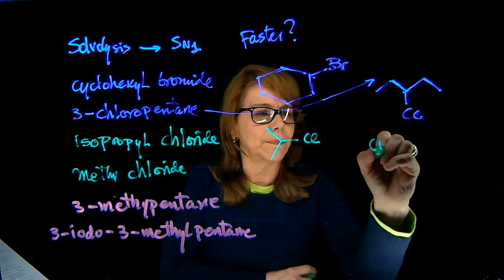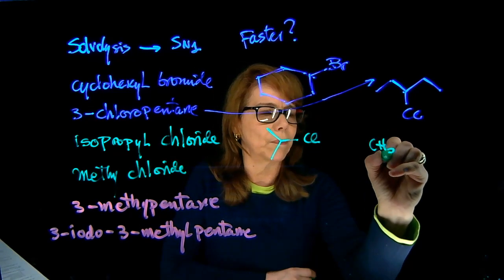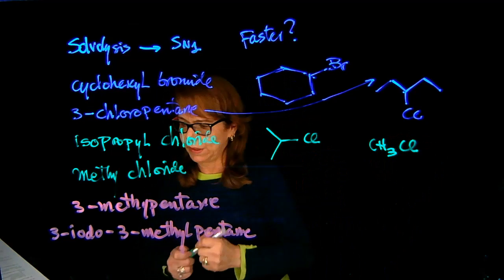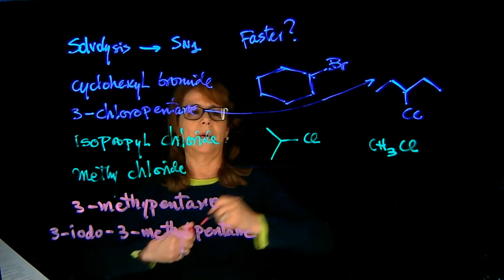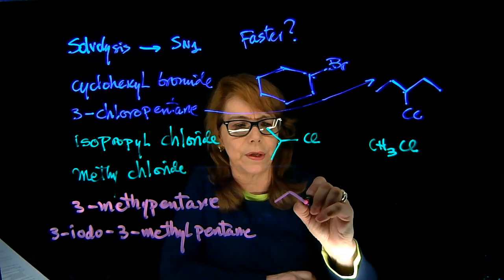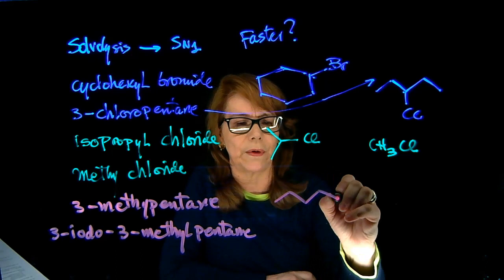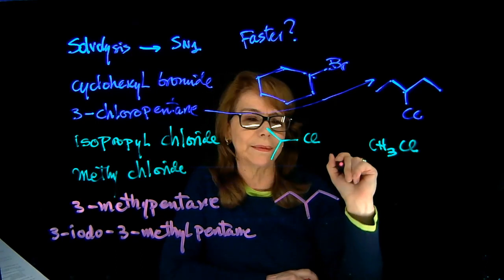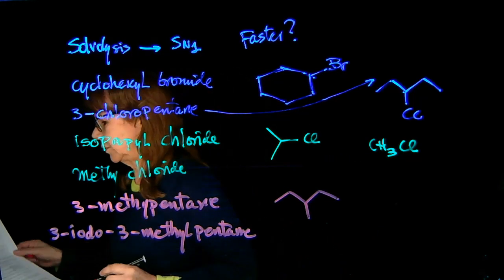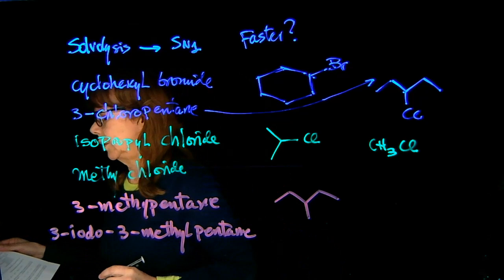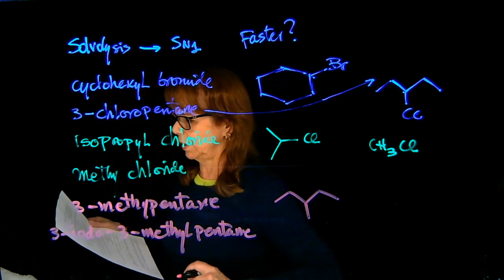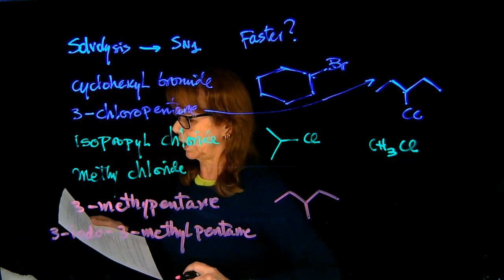Next is methyl chloride. And then 3-methylpentane — a five-carbon chain (1, 2, 3, 4, 5) with a methyl group at carbon 3.